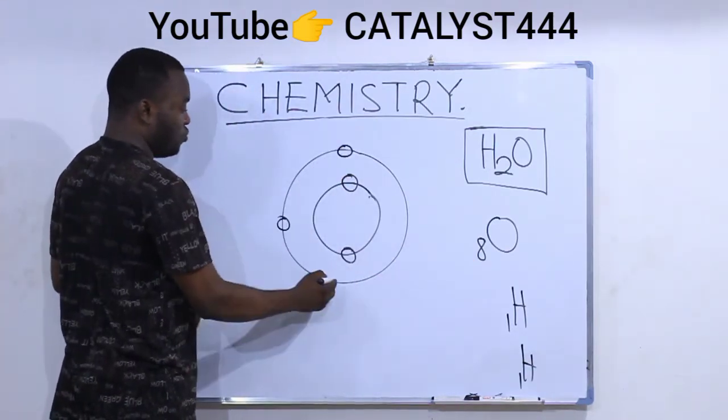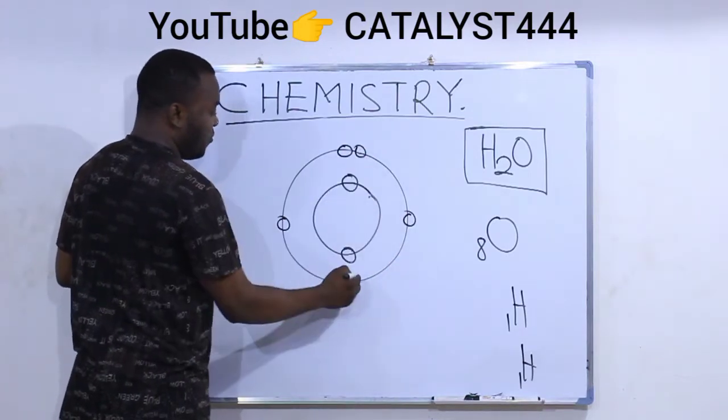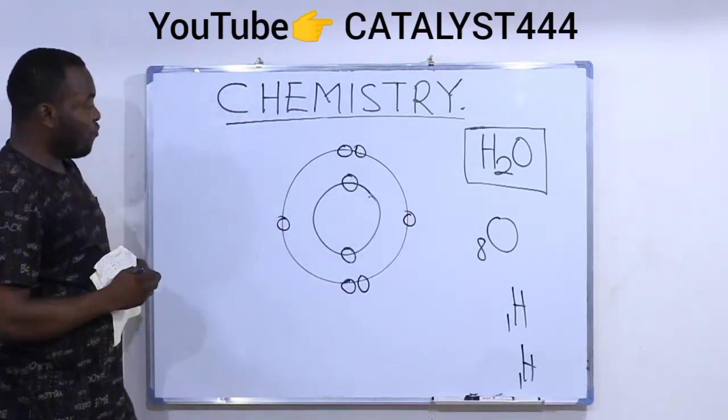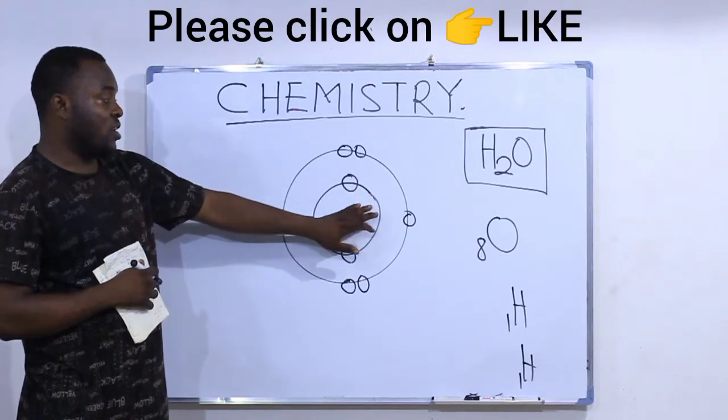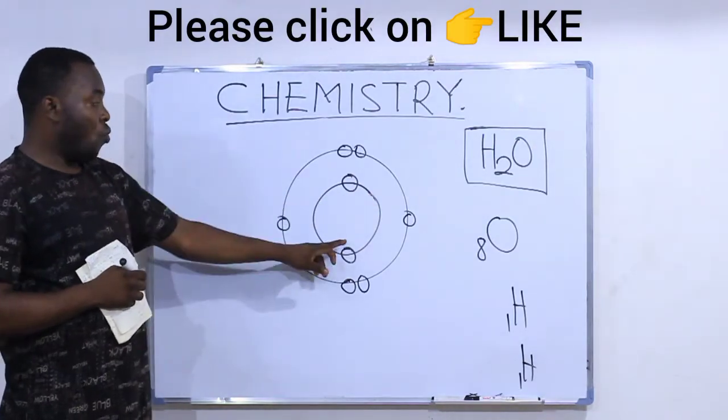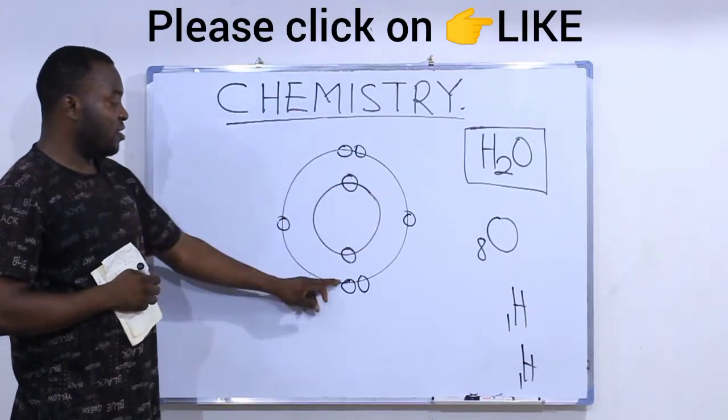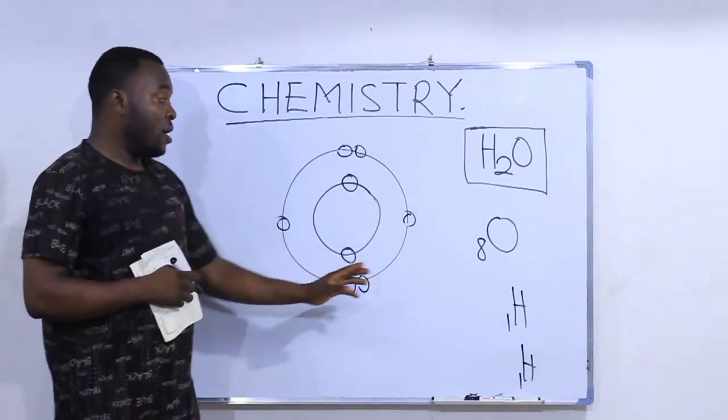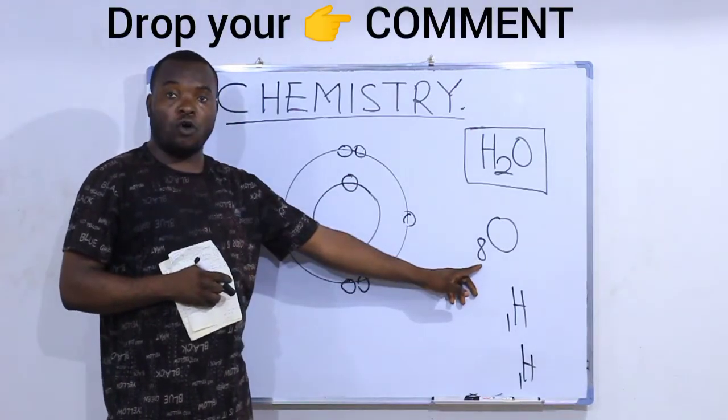One, two, three, four, five, six in the second shell. So I have a total of eight electrons in an oxygen atom. Why are they eight? Because the atomic number of oxygen is eight.